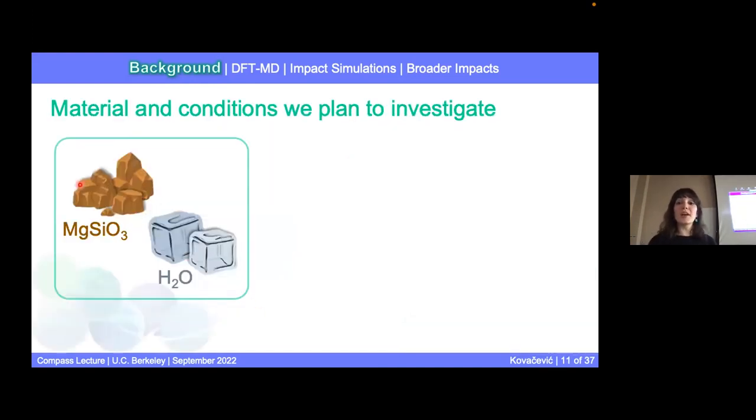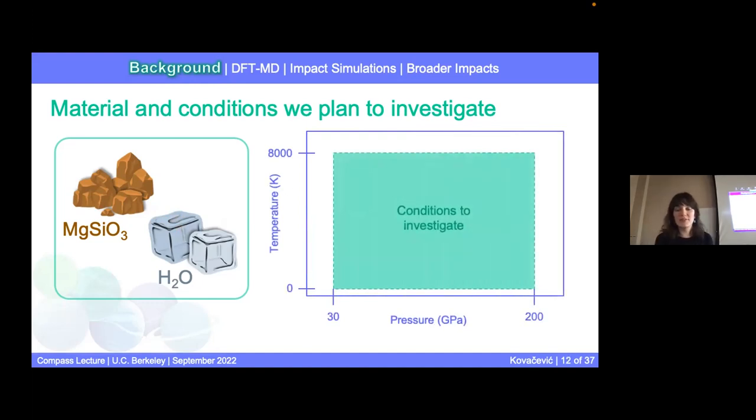To begin, I need to pick a rocky material. So let's choose enstatite or MgSiO3. It's the most common rocky material in Earth, and one that's commonly used when we're trying to interpret exoplanets tend to stick with MgSiO3 as a rocky material to be used within these planets. And then water ice, what else other than H2O? These are some of the conditions I plan to investigate.